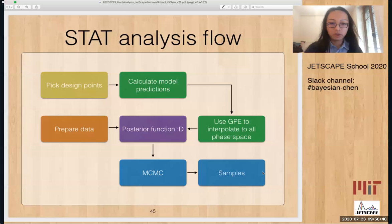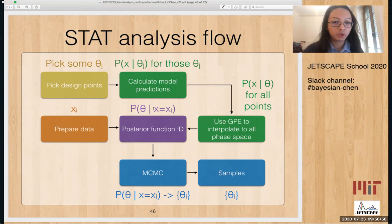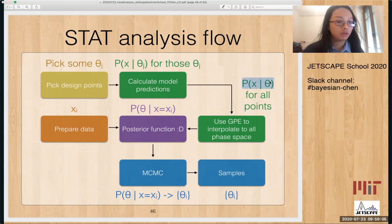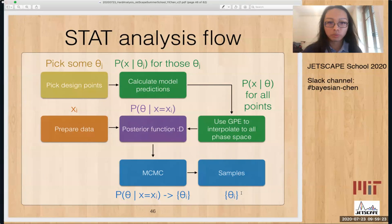So it looks very complicated with so many boxes. But if we write down what each box is supposed to do, then it becomes clear. The main thing for the upper half is to build a posterior function — this is p of theta given x. To do this, we need x and we need p of x given theta for all points. We calculate on a number of points and then interpolate, and MCMC is just a sampler to give you the samples.